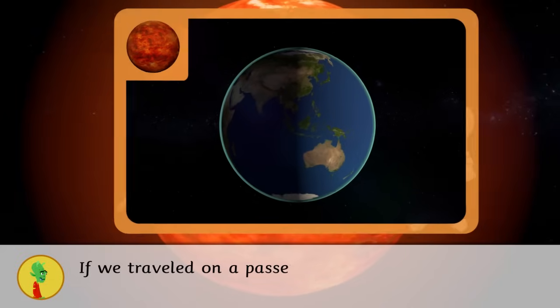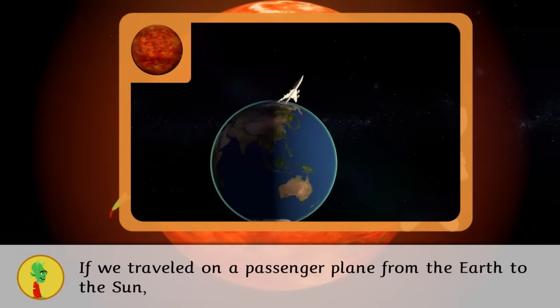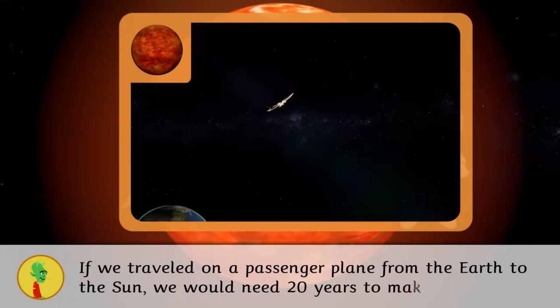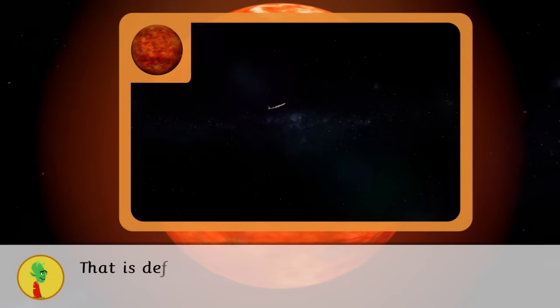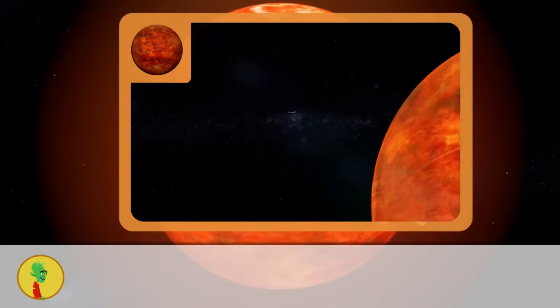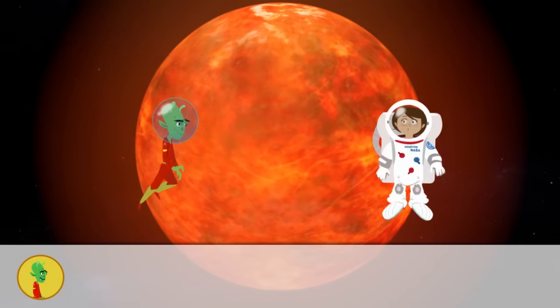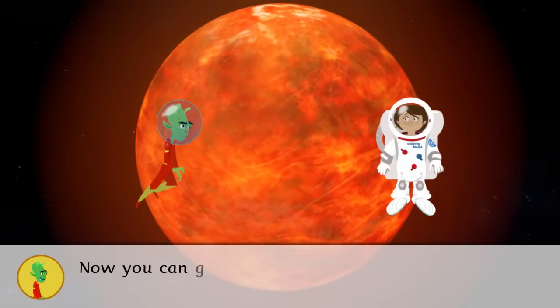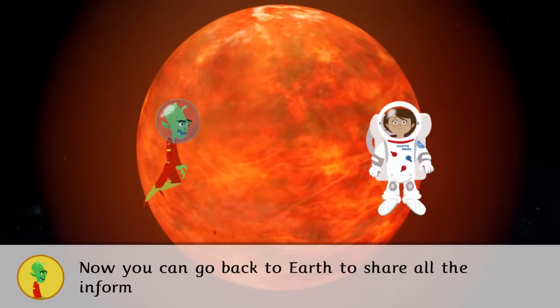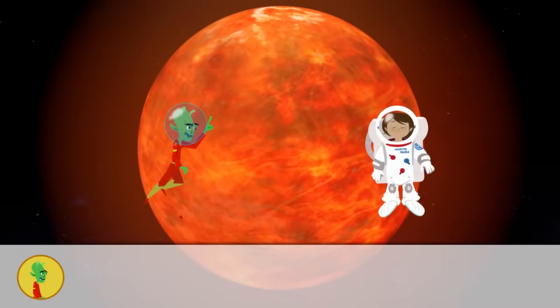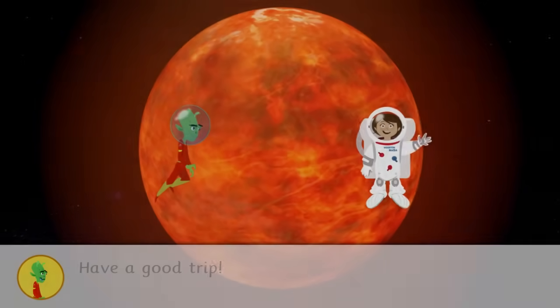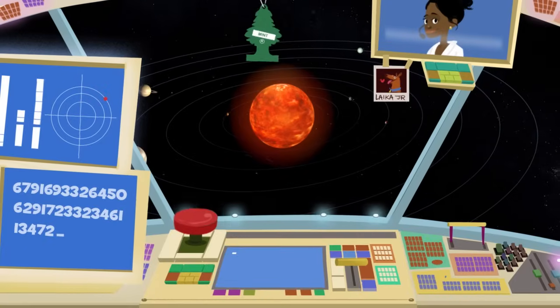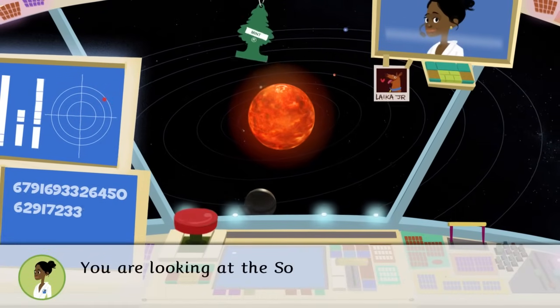If we traveled on a passenger plane from the Earth to the Sun, we would need 20 years to make it there. That is definitely a long trip. Did you like this quick trip around the Sun? Now you can go back to Earth to share all the information you learned. Have a good trip.